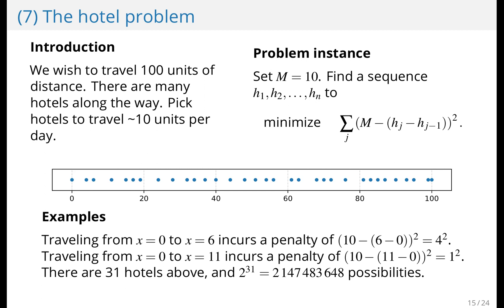In the graph shown in the middle, there are 31 hotels. And that amounts to approximately 2 billion possible sequences of hotels to stay in. So we need a better approach than trying everything.